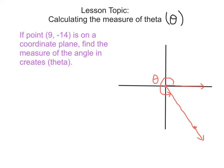In order to do that, we're going to use the reference angle we've been discussing in other lessons. We create a right triangle in this region and use trig to find this angle — the reference angle, theta prime — so that we can then find the measure of theta. Because right now there's really no way to find the measure of this angle; we could only estimate it.